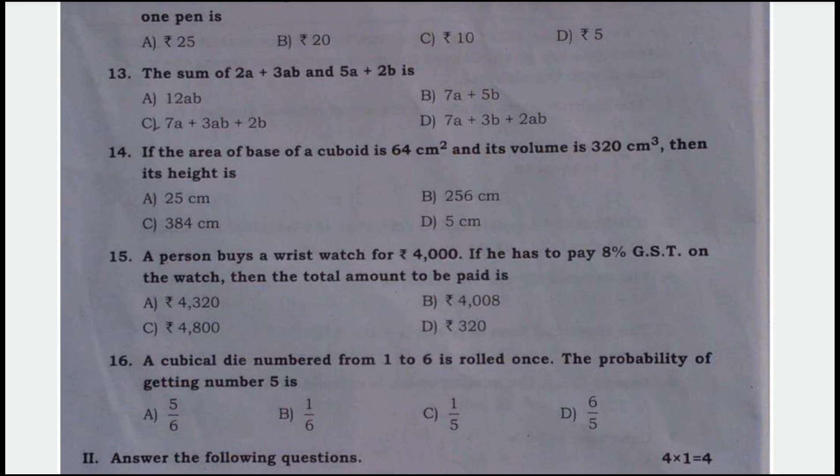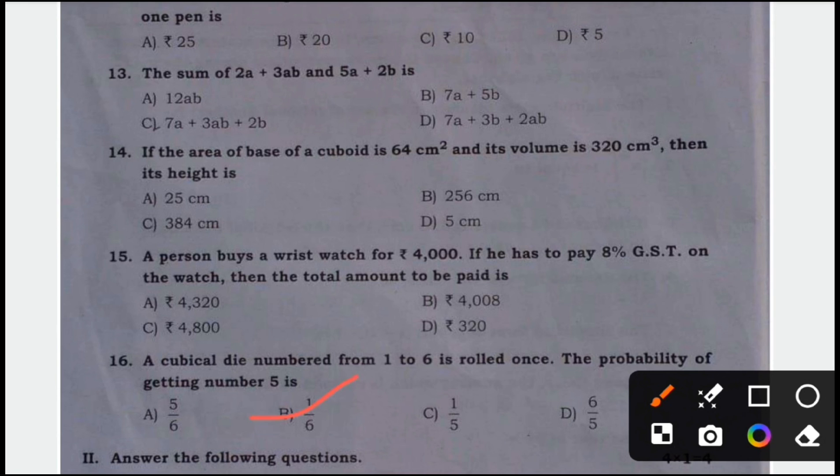Next, 16th question. A cubical die numbered from 1 to 6 is rolled once, the probability of getting number 5 is option B, 1 by 6 is the correct answer.